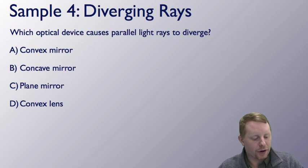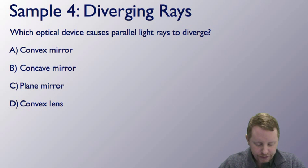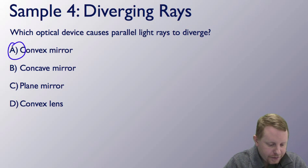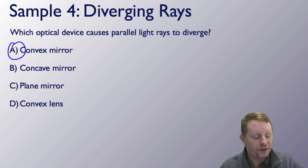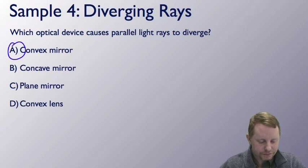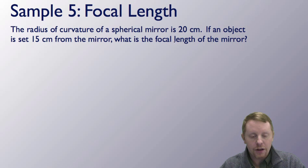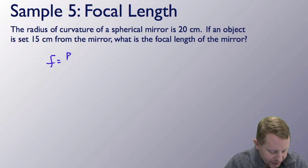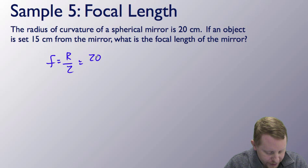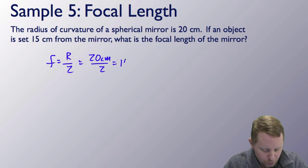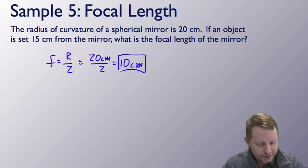Which optical device causes parallel light rays to diverge? Convex mirrors are also known as diverging mirrors for exactly that reason — they cause parallel light rays to diverge. Another problem: the radius of curvature of a spherical mirror is 20 centimeters. If an object is set 15 centimeters from the mirror, what is the focal length? Focal length is half the radius, so that'll be 20 centimeters divided by 2, or 10 centimeters.